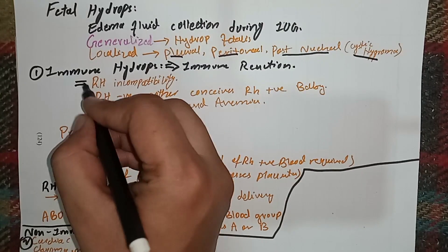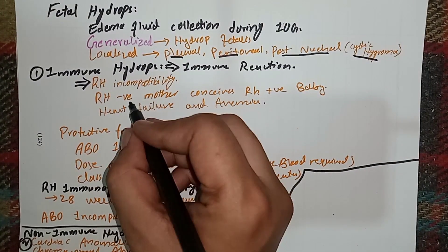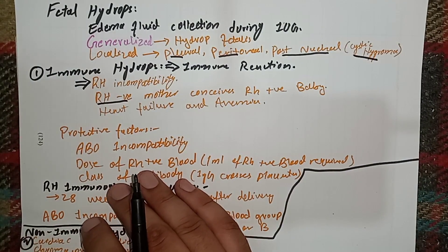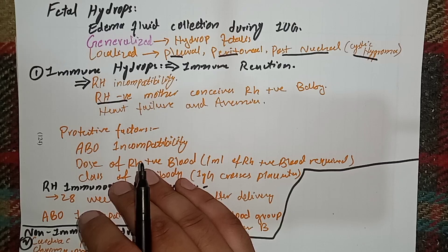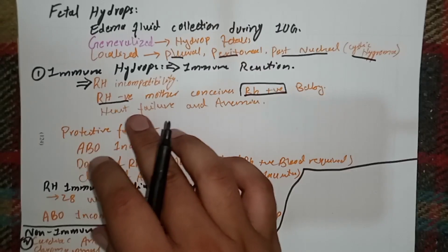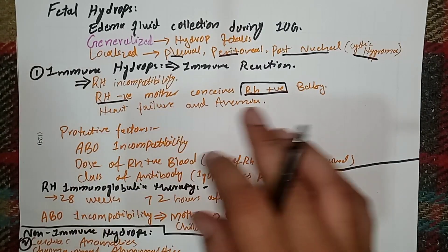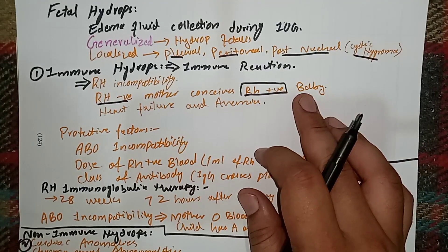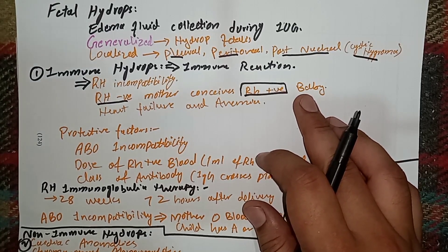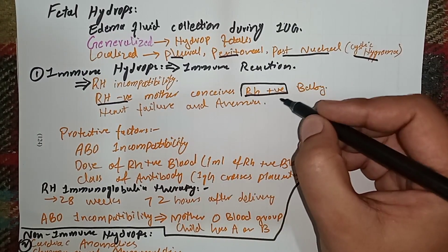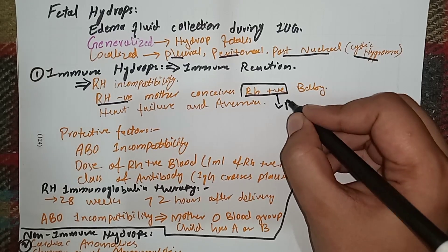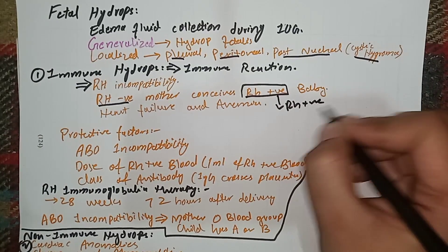RH incompatibility happens when the mother has an RH-negative blood group while the father has an RH-positive blood group, resulting in an RH-positive baby. Whenever an RH-negative mother conceives an RH-positive baby, there is a risk of immune hydrops. During conception and delivery, some amount of RH-positive blood cells cross the placenta and enter into the maternal circulation.